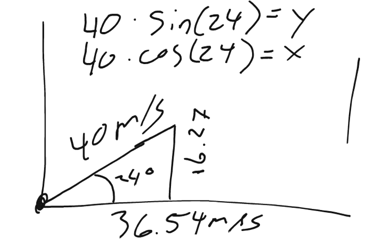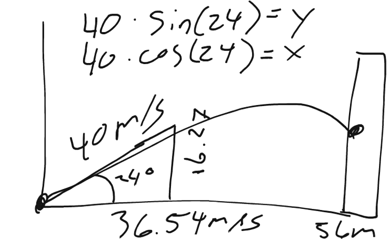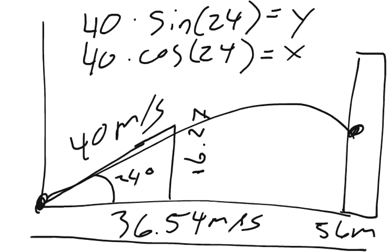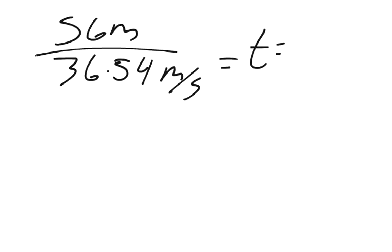We're aiming at this building that's 56 meters away, and we want to know how high the stream of water hits. For the x-component, we know it's 56 meters over and traveling at 36.54 meters per second. So 56 meters divided by 36.54 meters per second equals the time, which equals 1.53 seconds.